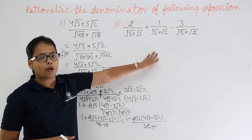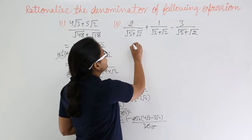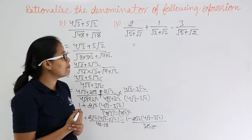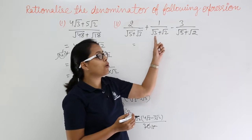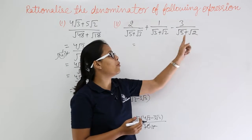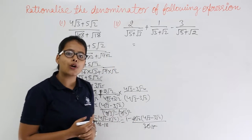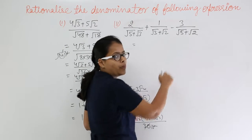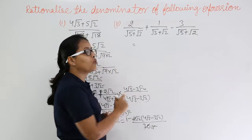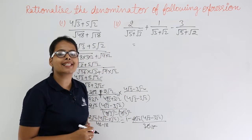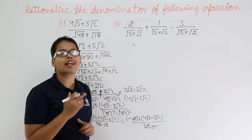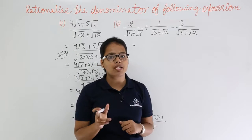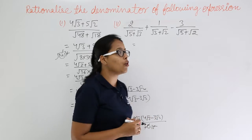Let's move on to the second problem which is 2/(√5 + √3) + 1/(√3 + √2) − 3/(√5 + √2). You know that you are going to rationalize all these denominators, and I am always going to write the form a² − b² after rationalizing the denominator because you will always get the form (a + b)(a − b) in the denominator.